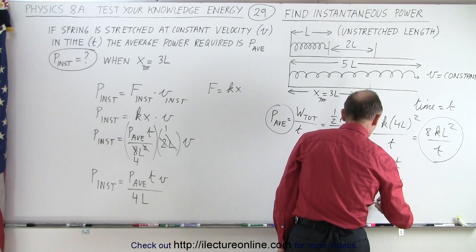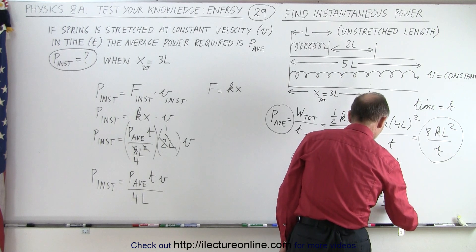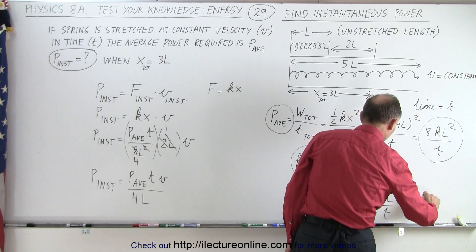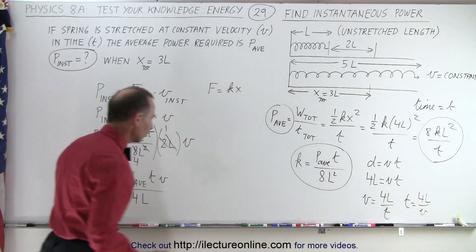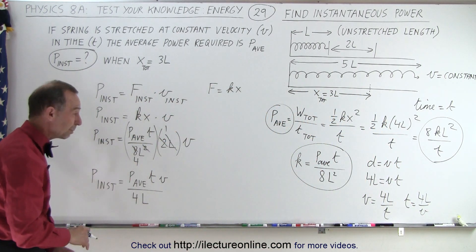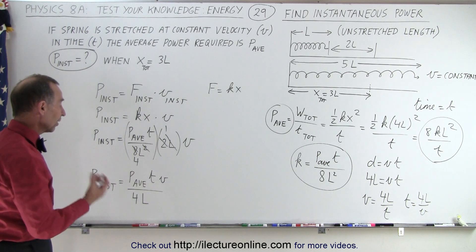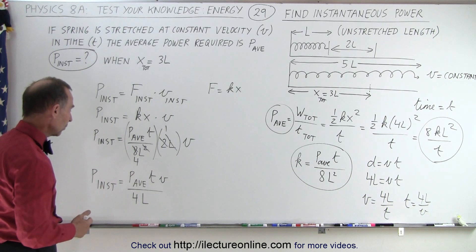That means that V is equal to 4L divided by T, or T is equal to 4L divided by V. So we can make that distinction here, so that can come in here. We can replace either T or V, depending upon what variable we want to keep and what variable we want to get rid of.